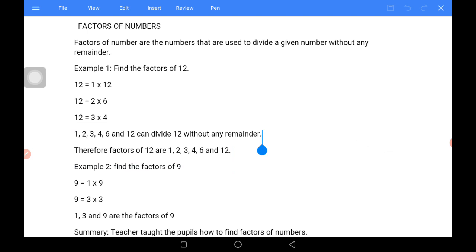Therefore, 1, 2, 3, 4, 6, and 12 can divide 12 without any remainder. Factors of 12 are 1, 2, 3, 4, 6, and 12 itself.